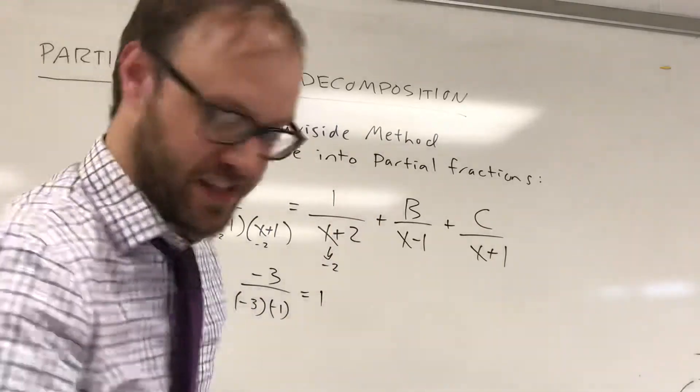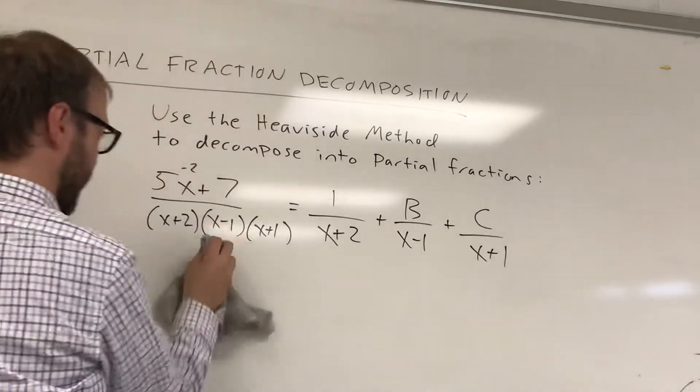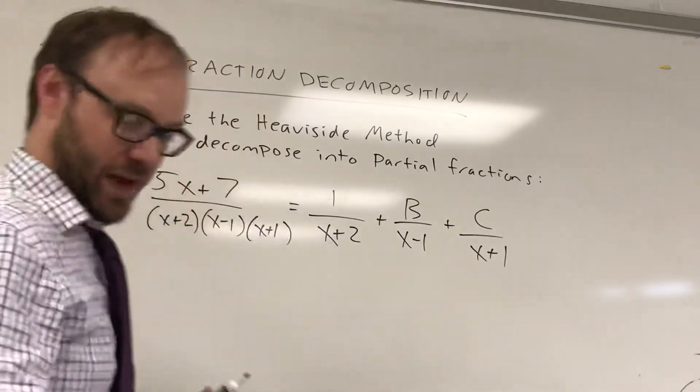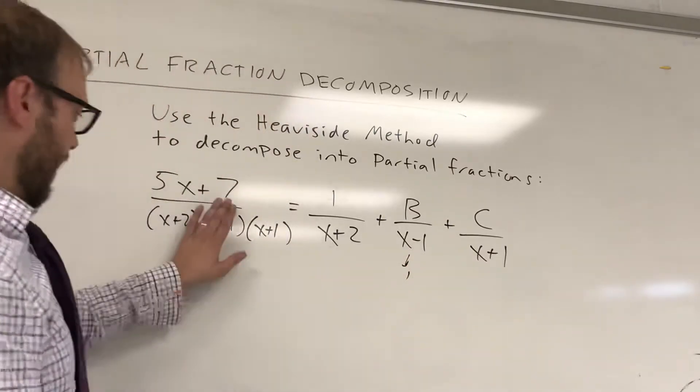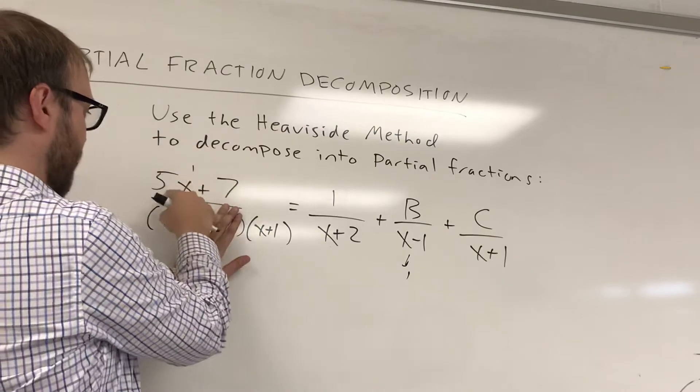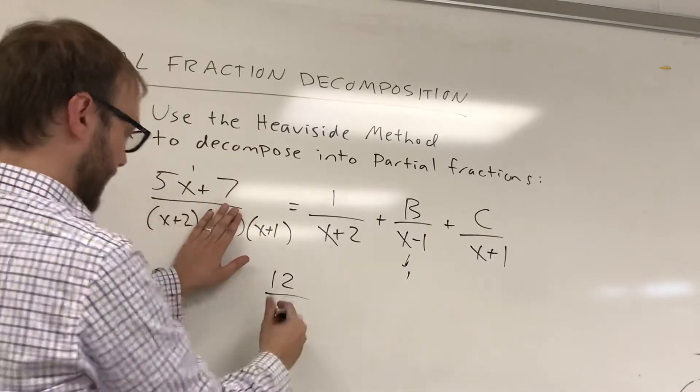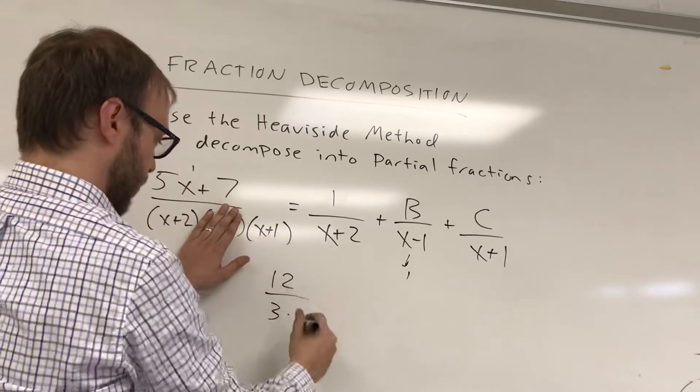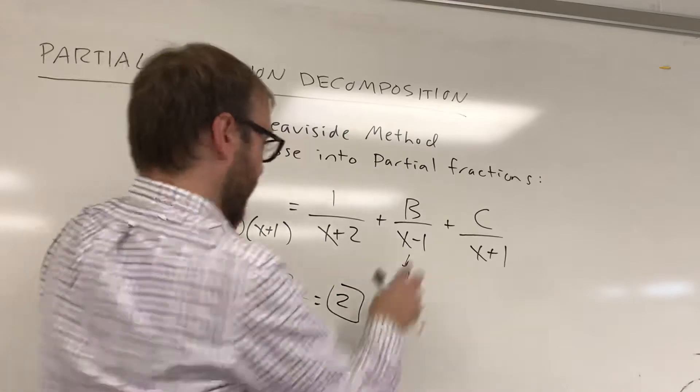And then you just continue with the other terms. So for the other terms here, what would make this denominator here zero? That would be a value of 1. So I cover up the 1 that would give me a zero term. I put in a 1 here. 5 times 1 plus 7 is 12. 1 plus 2 is 3. 1 plus 1 is 2. 12 divided by 6 is 2. And that's my B value.